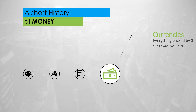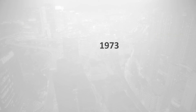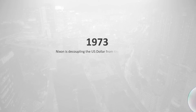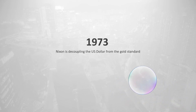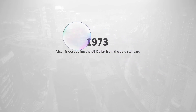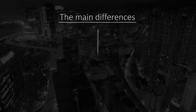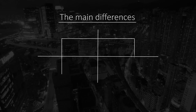Last but not least in our short historical overview, the year 1973 marks probably the biggest change. Nixon decoupled the US dollar from gold, making both the US dollar and the other currencies in the world backed by — well, nothing. This brings us to the main differences between these two types of money: value and scarcity.